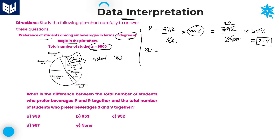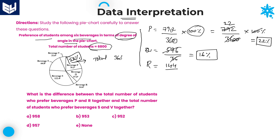Beverage P is 22 percentage. Now Q: Q value is 57.6 degrees, written as 576 divided by 36, which equals 16 percentage. Beverage Q is equal to 16 percentage. Next, R is equal to 144 divided by 36, that is 4 percentage. That is beverage R.